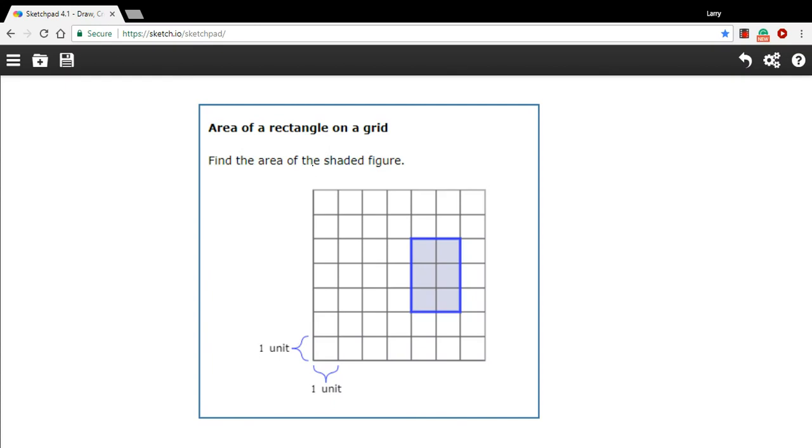In this problem, we're being asked to find the area of a rectangle on a grid, and there are really two ways to do this. If a rectangle is already on a grid, and this is just a unit grid, so each block here is one unit square. If you want to find the area of a rectangle on a grid, you can just count the squares.